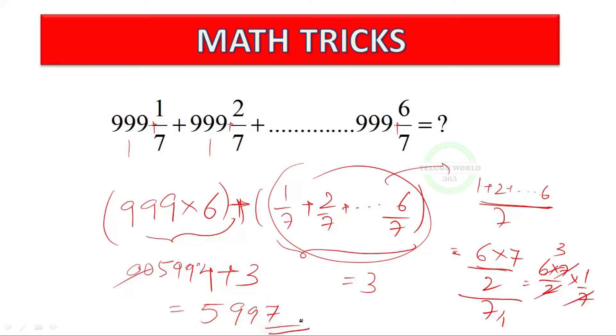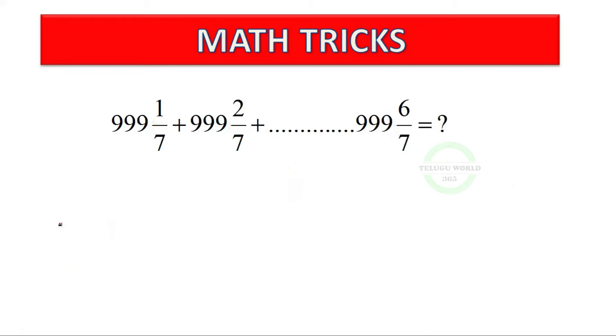So the answer is 5997. Here we will discuss the multiplication with 9 class. If you want to see the video, you will see the answer. We will check the option. Option is C, 5997.